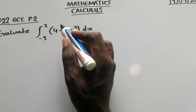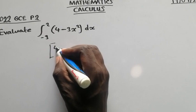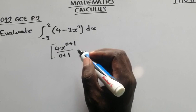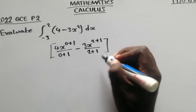So now how do we integrate? We have to add the power by 1 and we divide the summation into the coefficient. So it will be 4x^(0+1) over (0+1) minus 3x^(2+1) over (2+1).